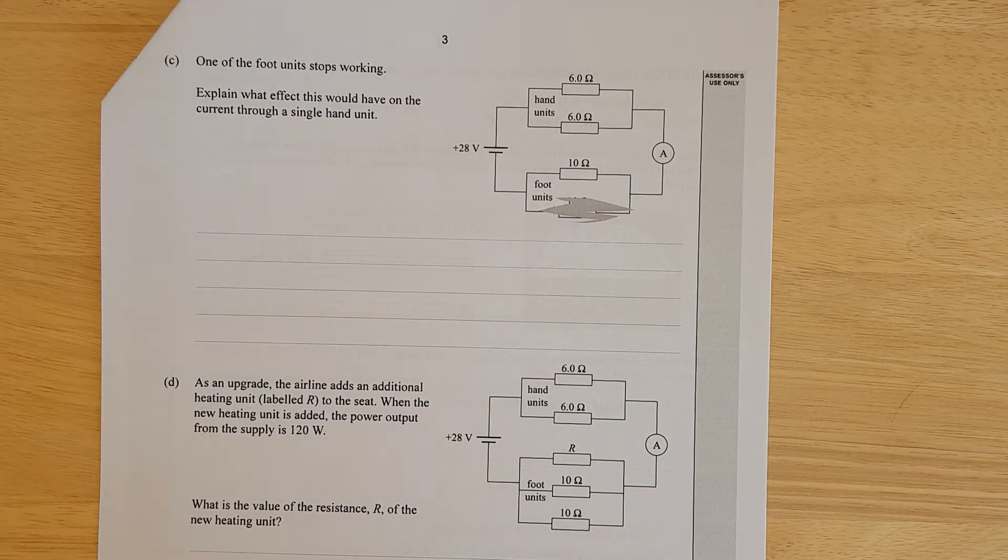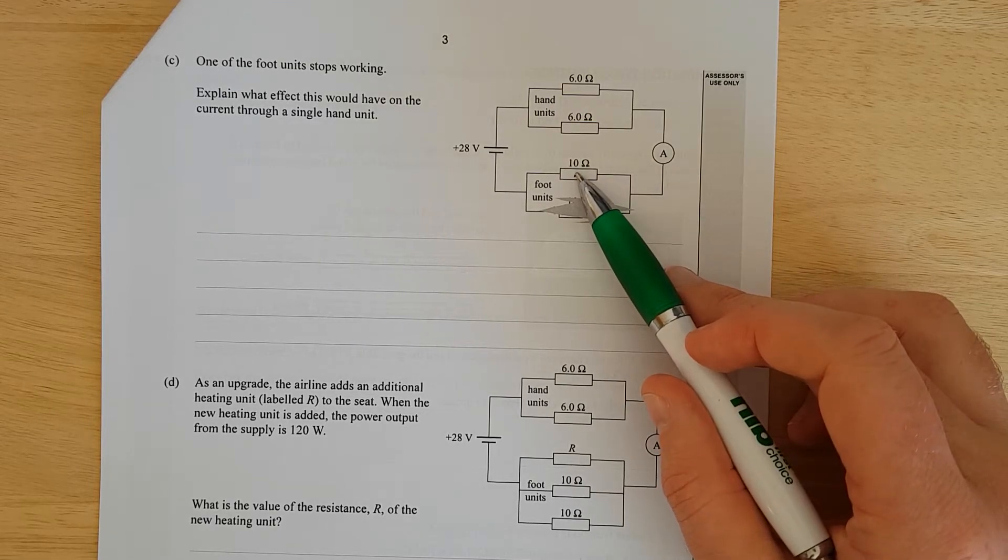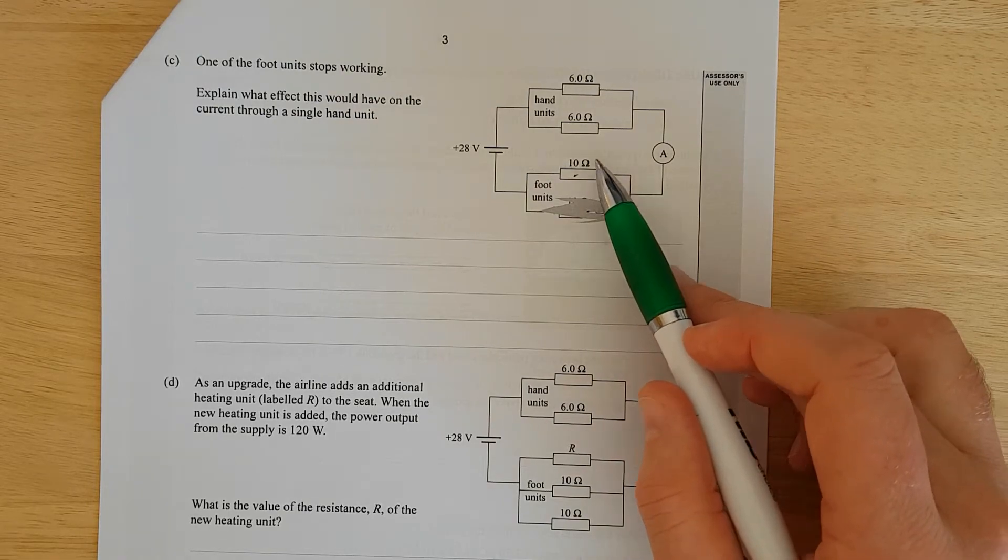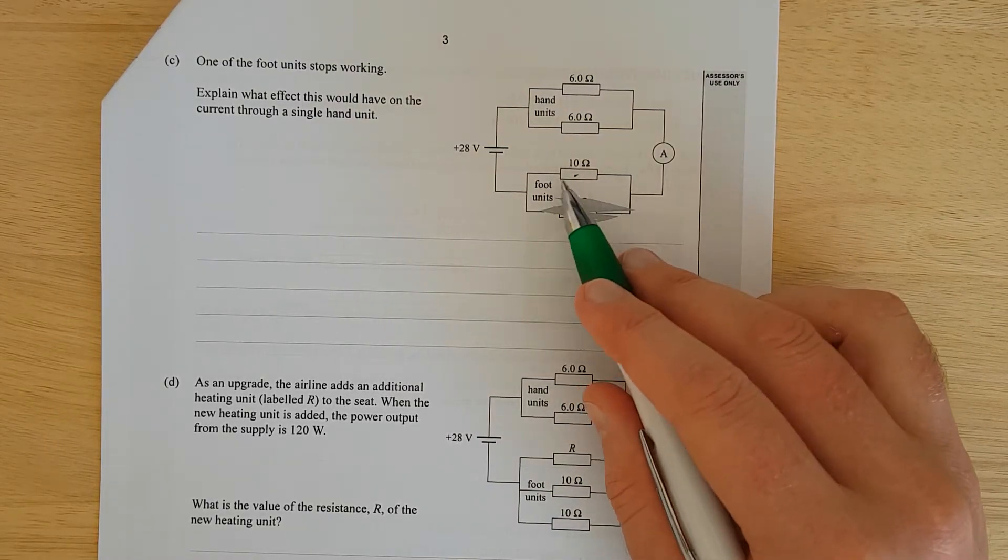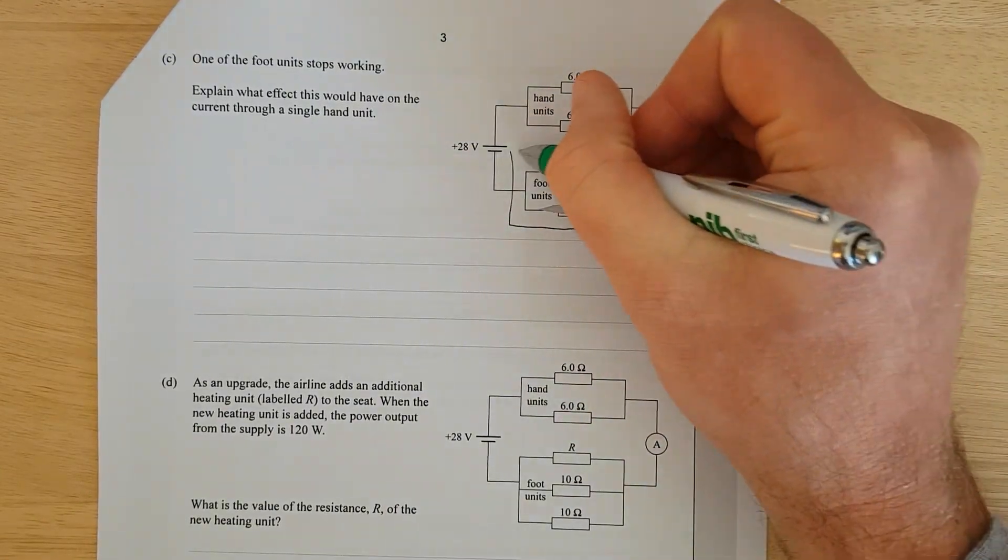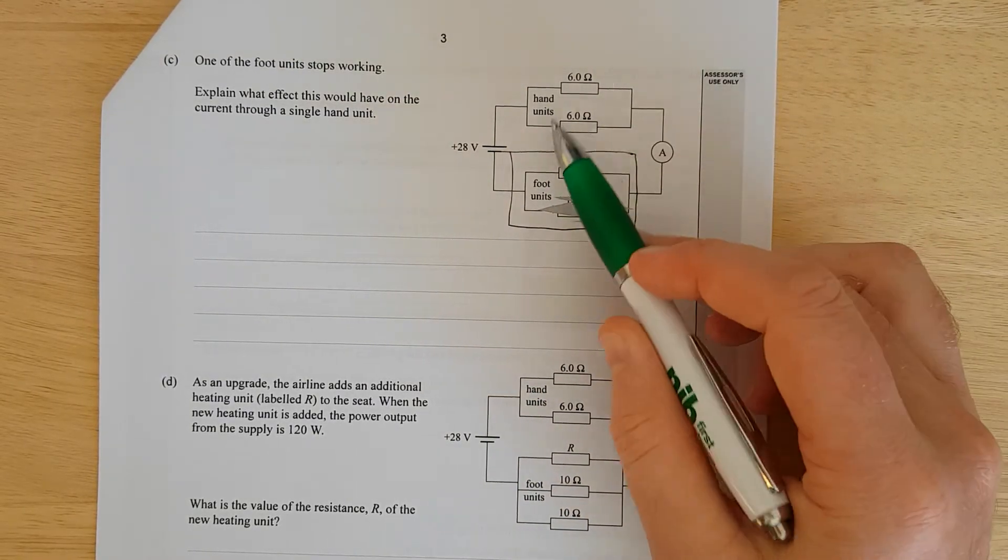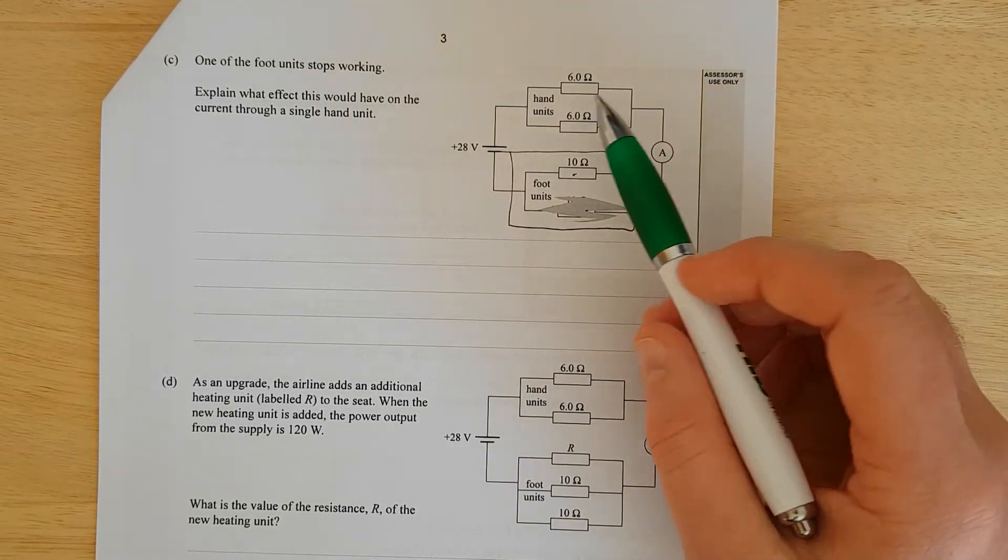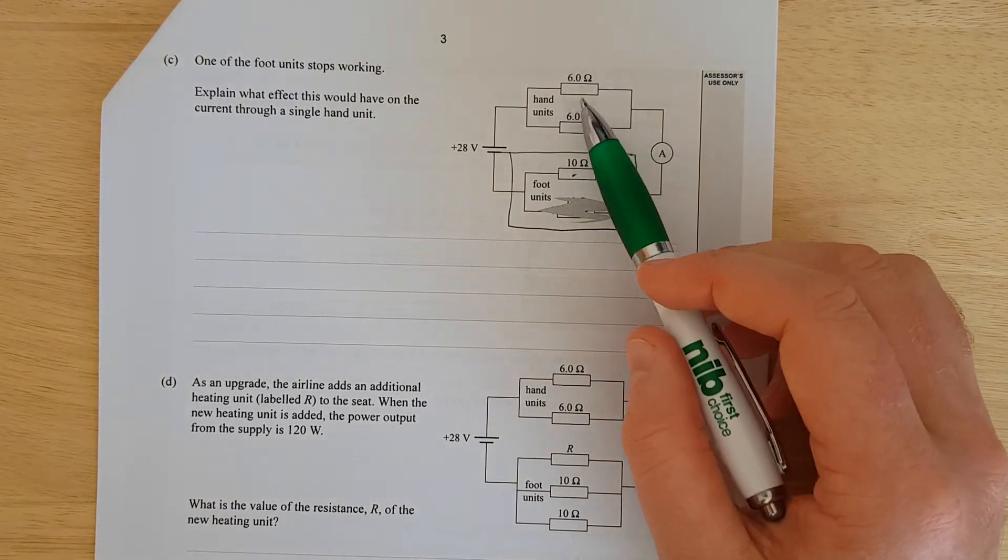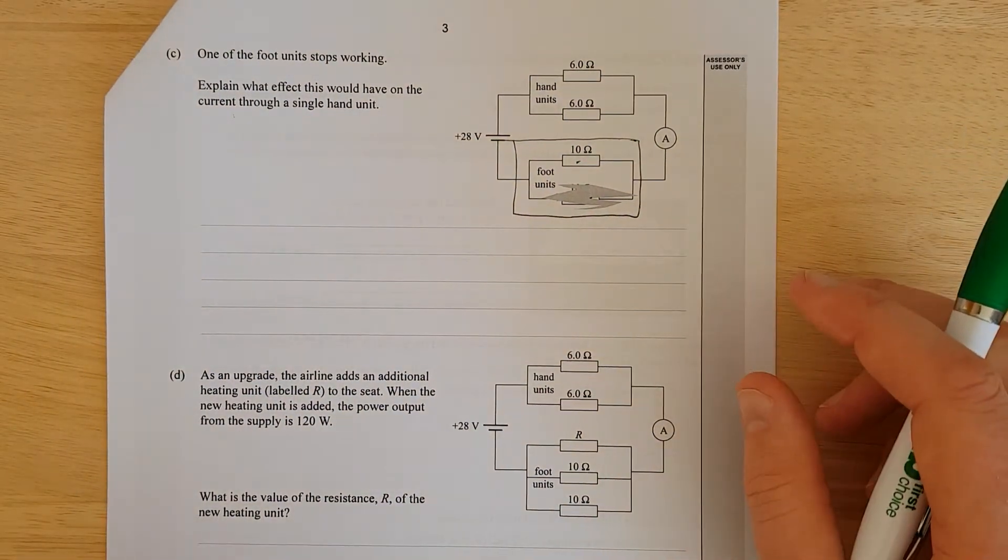One of the foot units stops working, explain what effect this would have on the current through a single hand unit. Back to the whole door analogy - if we've blocked one door, everyone has to go through this door, so that increases the resistance. The resistance of this unit here has increased. But because all the current has to go through here to get back to the negative terminal, that means the total resistance of the whole circuit has increased, which means the total current is going to decrease. So the current going through either of these hand units is going to decrease. I'll pause it and write it slightly more coherently.